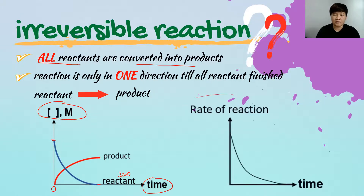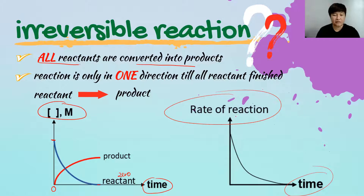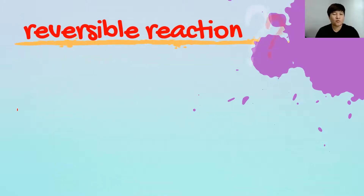The curve of rate of reaction versus time shows that the rate of reaction is inversely proportional with time — in other words, the rate of reaction will decrease along with time.